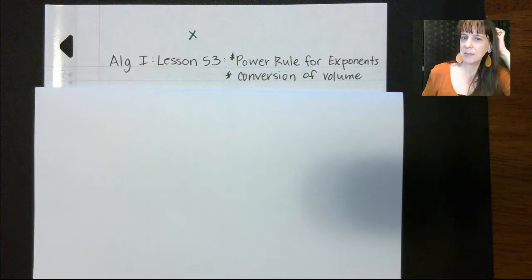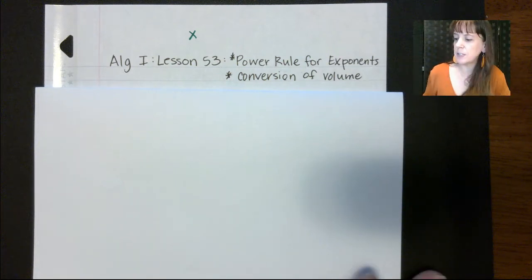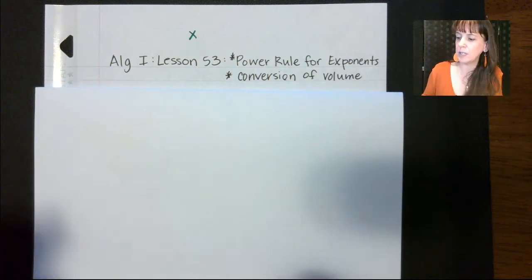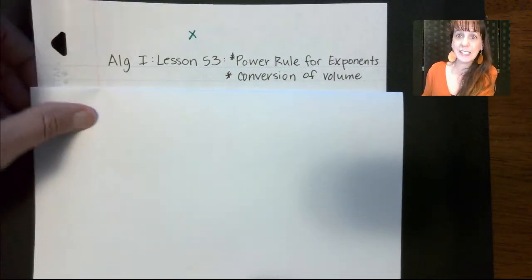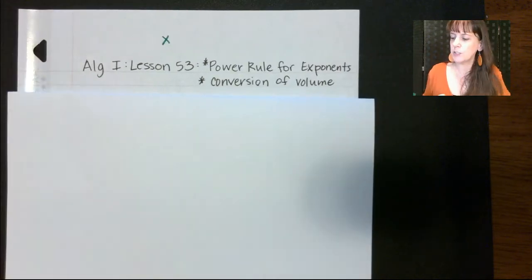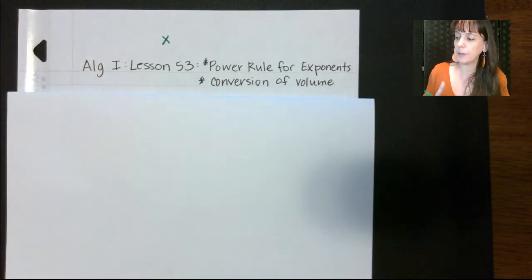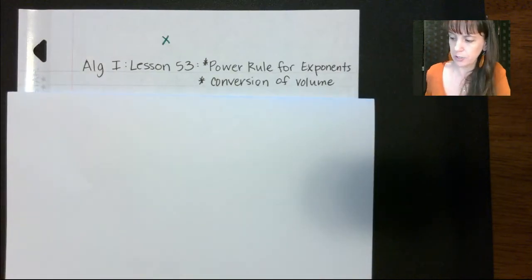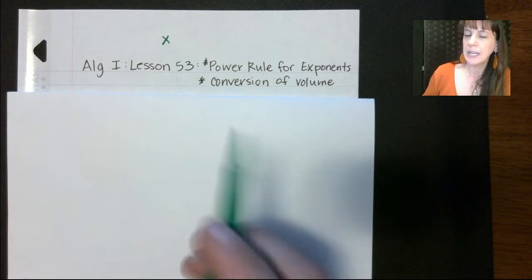Hi friends! Welcome back. Today we're talking about Lesson 53 Algebra 1 Saxon 3rd Edition, the Orange Book. So we're talking about the power rule for exponents and conversion of volume.